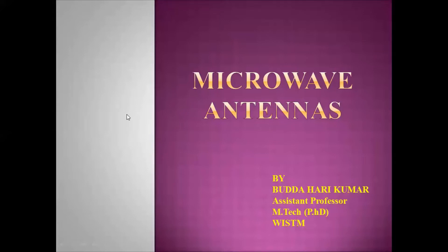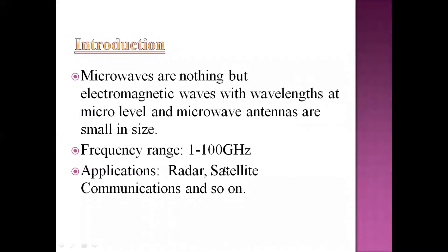First of all, microwave antennas. Microwave antennas are nothing but electromagnetic waves with wavelengths at the micro level, and microwave antennas are small in size. The frequency range is 1–100 GHz.